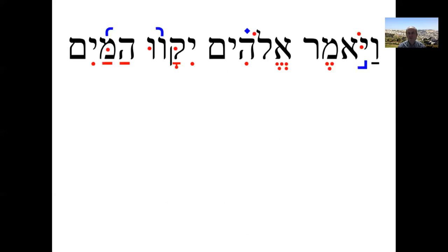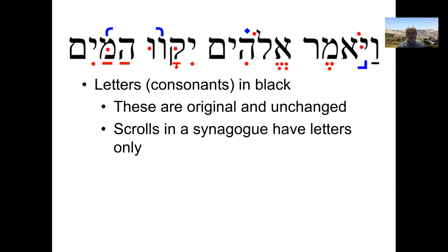This is a bit of Hebrew script here, from Genesis 1. It says, 'And God said, let the waters be gathered.' The part that's in black — those are the letters. Those are what you would see in a Torah scroll in a synagogue today, and those are what was in the text as it was originally written. The red marks are little dots above and below mostly, and they indicate what the vowel sounds were supposed to be. The Masoretes devised a way to put these dots into the text such that it didn't change any letters — it didn't even change the spacing between the letters. It's just there to allow you to know what the vowel sounds are supposed to be. And the blue marks are cantillation marks that tell you how to chant things.